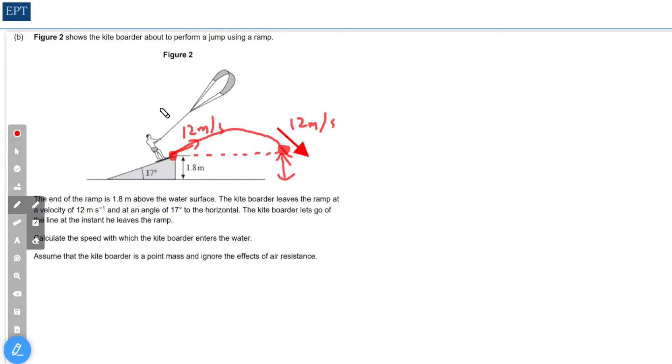Let's look at the triangle and work out the components. Right at the start we have this triangle. Our initial component in the horizontal direction is just going to be 12 cosine of 17, and the vertical component is going to be 12 sine of 17.